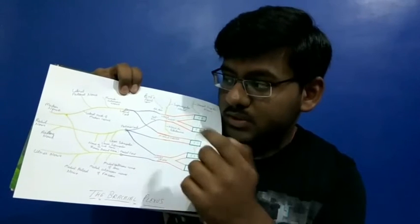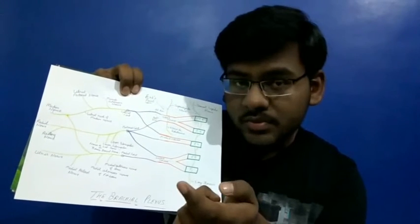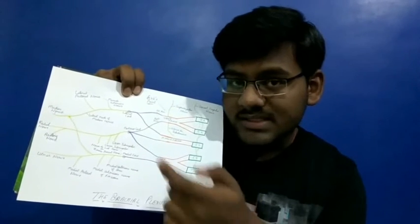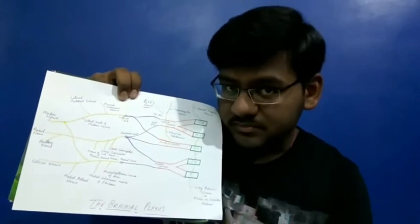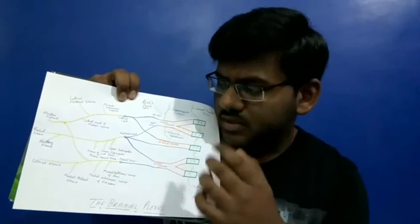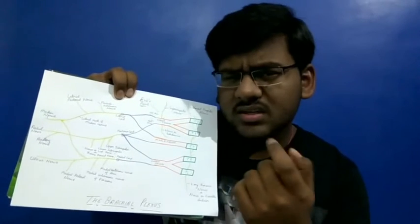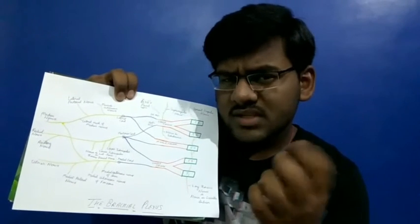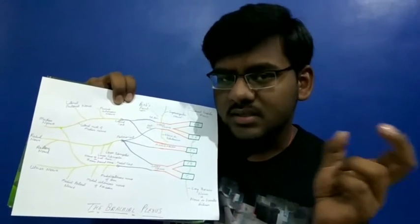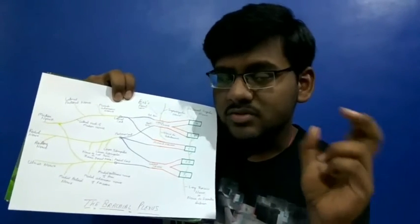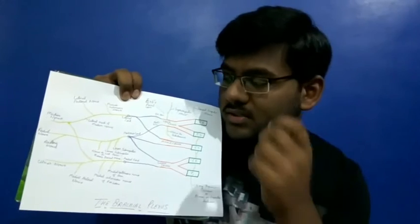Now, the last component of the brachial plexus is the branches. There is an easy way to learn this using mnemonics.